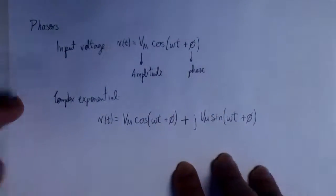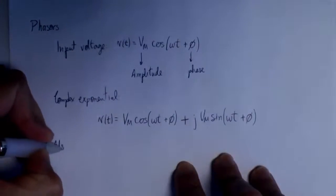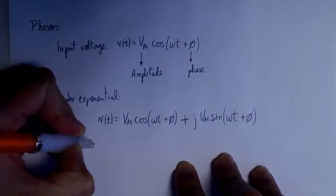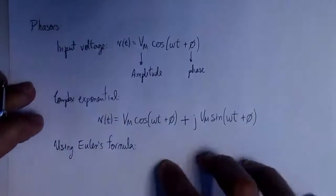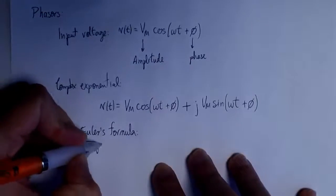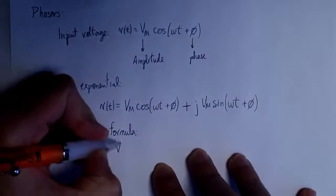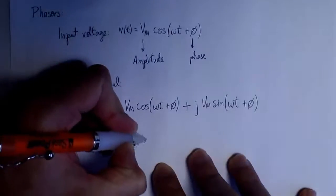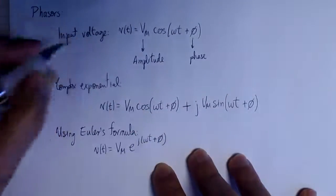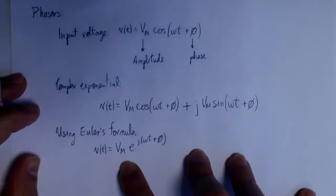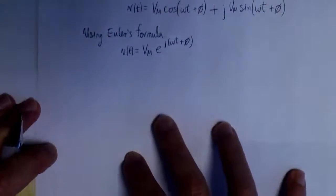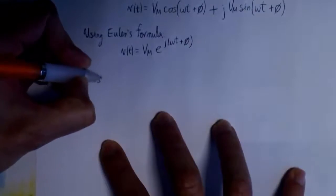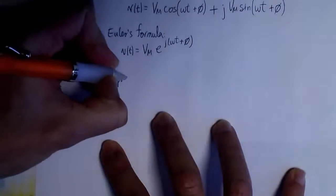We have the real input, and then we add an imaginary part, which in this case is j·Vm times a sine function. Using Euler's formula, we can express this as a complex exponential: Vm times e^(j(ωt + φ)). Now we consider this as the input of our circuit and our calculations are easier. But what we are going to do here is use phasors instead of using the complex exponential form directly.